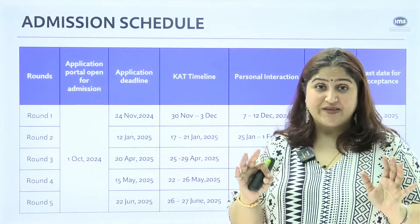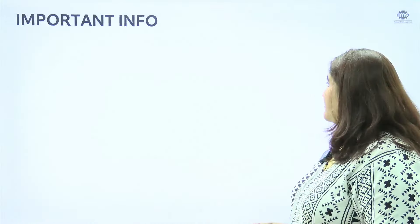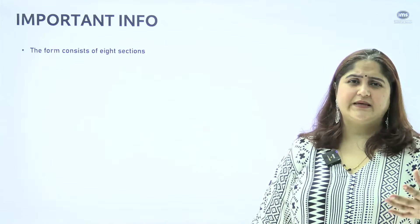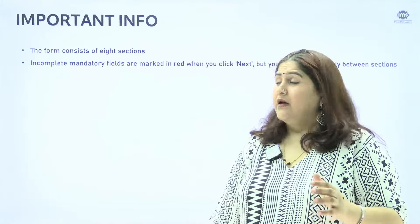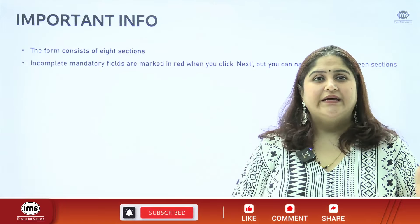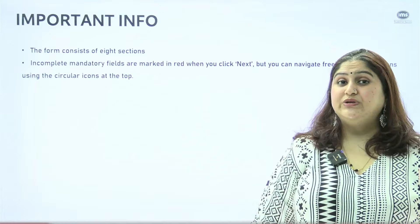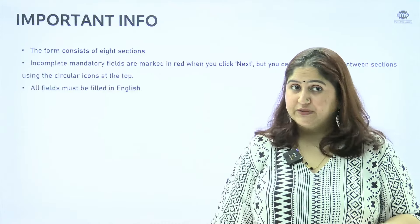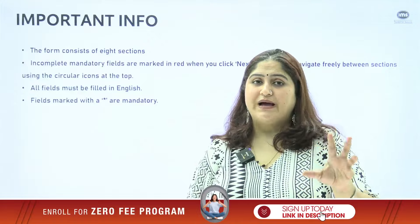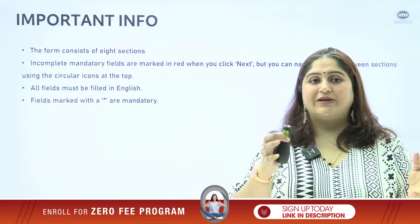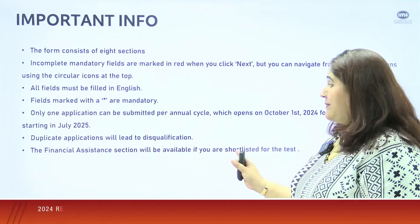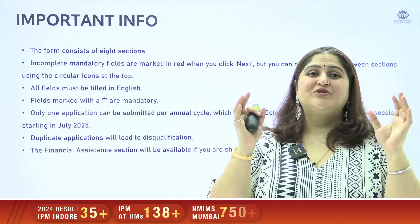Once the application is ready, the most important information: the form consists of eight sections, including your personal details, parents' details, and academic section. Incomplete mandatory fields are marked in red — you will not be able to move to the next section if anything is left incomplete. It will be highlighted in red and you need to update that information. All information must be in English, and anything mandatory is marked with a red asterisk.